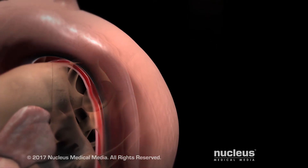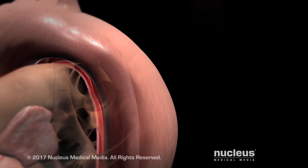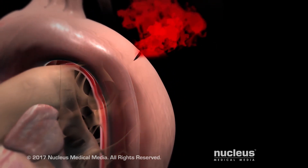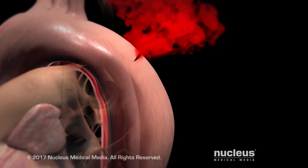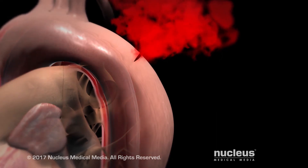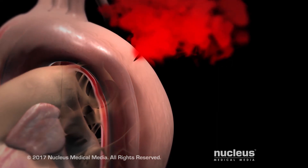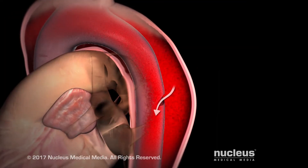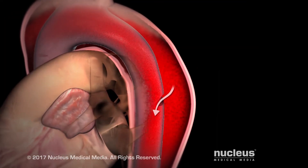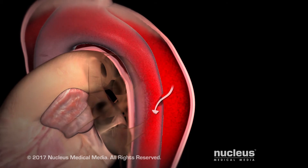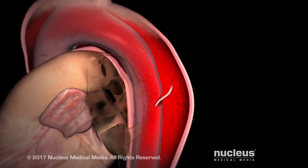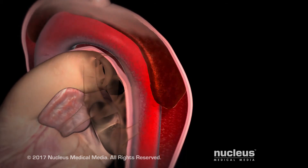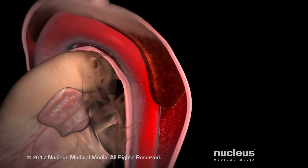From here, the blood may break through the outer layer of the aortic wall, causing an immediate life-threatening condition, or it may re-enter the aorta through another tear in the intima. Over time, a blood clot may form in the false channel.